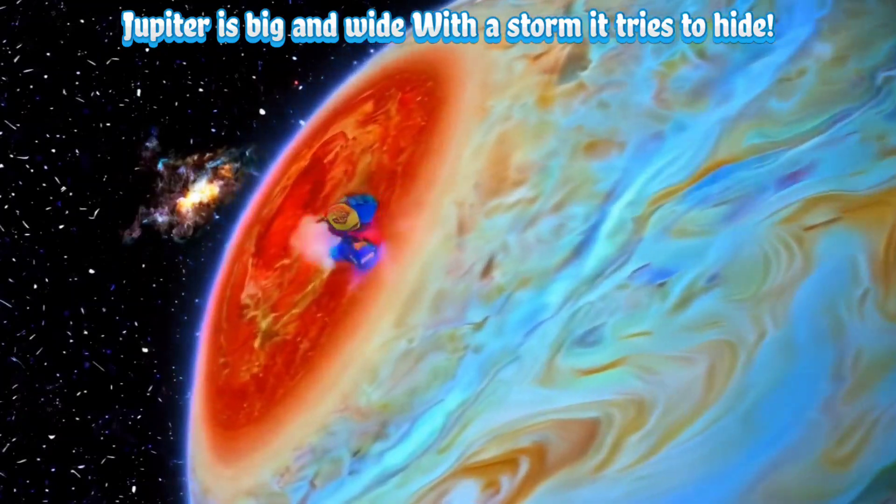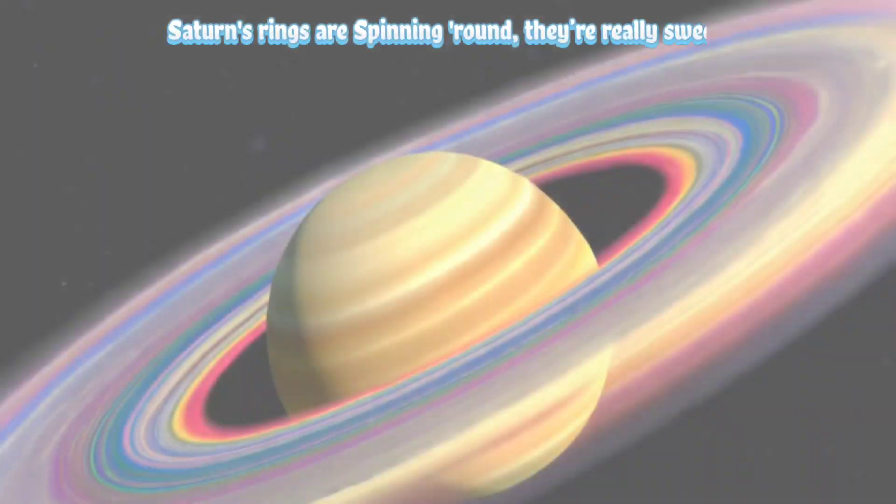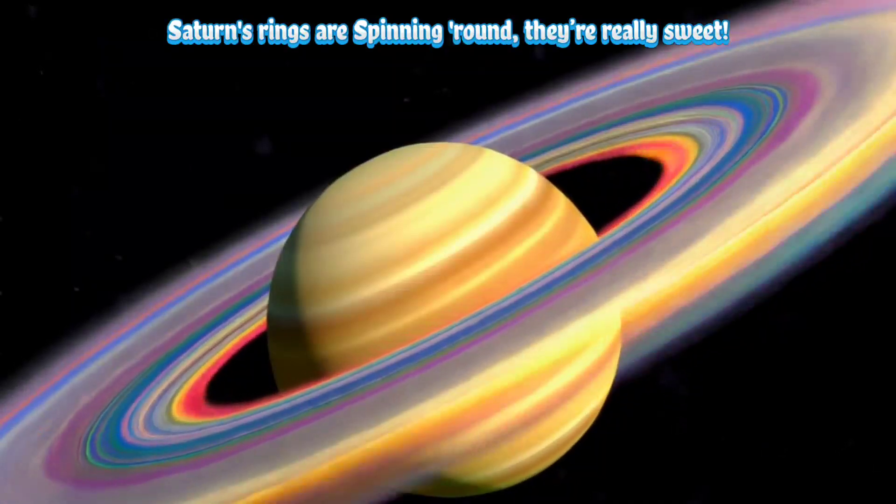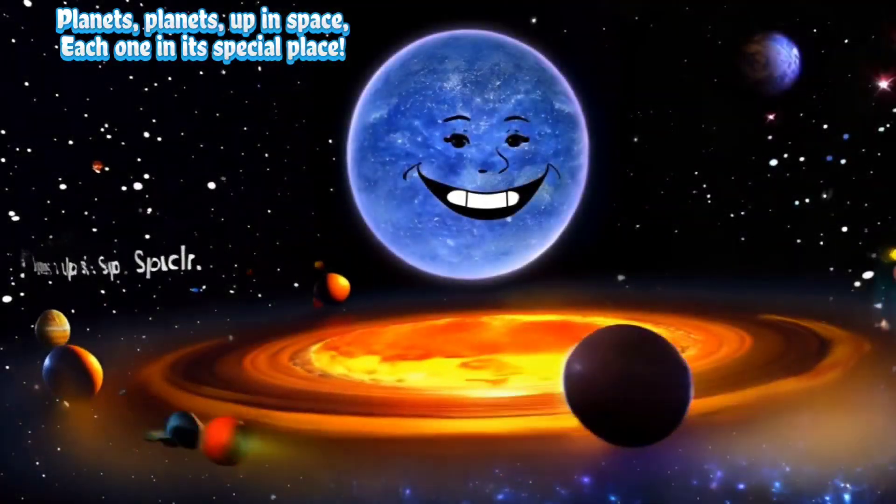Jupiter is big and wide with a storm it tries to hide. Saturn's rings are bright and neat, spinning round they're really sweet.